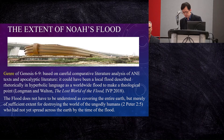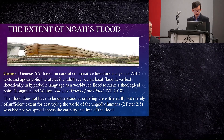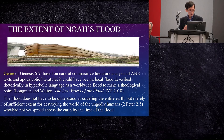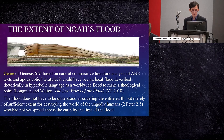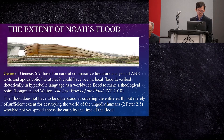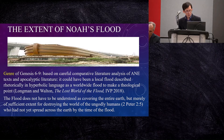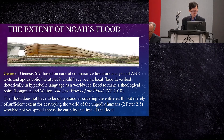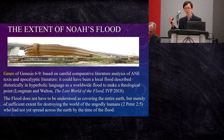As to the flood — Noah's flood, which Kenton mentioned just now as a big issue — I agree with Old Testament scholars Tremper Longman and John Walton, who argued in their book The Lost World of the Flood that based on genre analysis of the text derived from careful comparative literature analysis of ancient Near Eastern texts and apocalyptic literature, we can understand the flood as a local flood described rhetorically in hyperbolic language as a worldwide flood to make a theological point. The flood does not have to be understood as covering the entire globe as we understand it today, but merely of sufficient extent for destroying the world of the ungodly humans — universal in the sense that it destroyed all human beings except Noah and his family, but not requiring it to cover the entire globe.